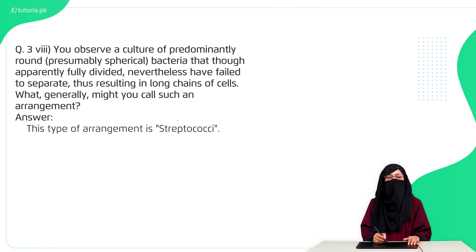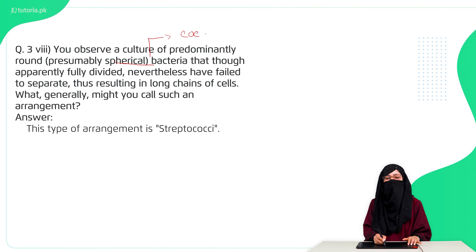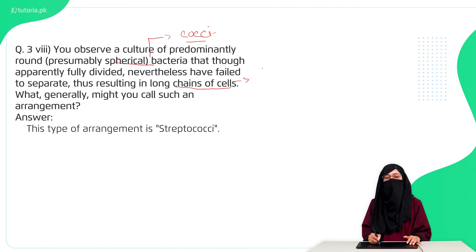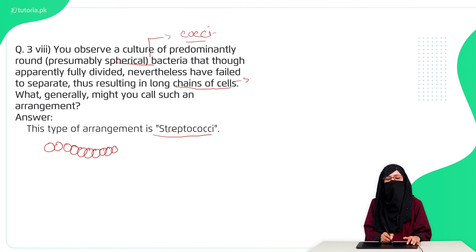Question eight: you observe a culture of predominantly round spherical bacteria that have fully divided but failed to separate, resulting in long chains of cells. Spherical means coccus, and long chains of cocci are called streptococci. So we call it streptococci, and you will also draw them accordingly.